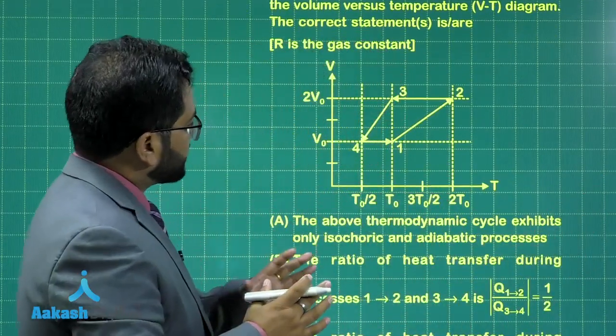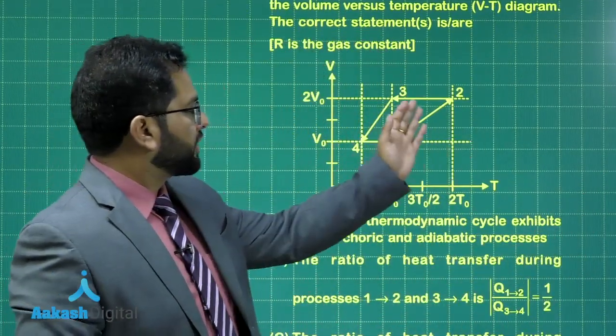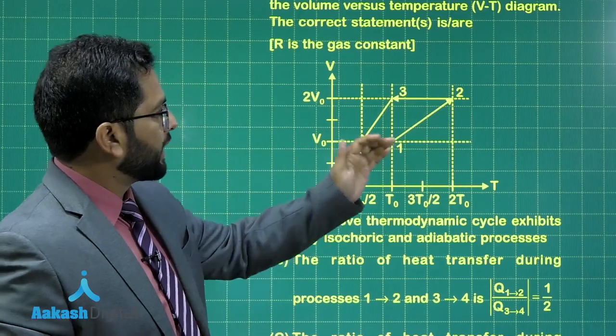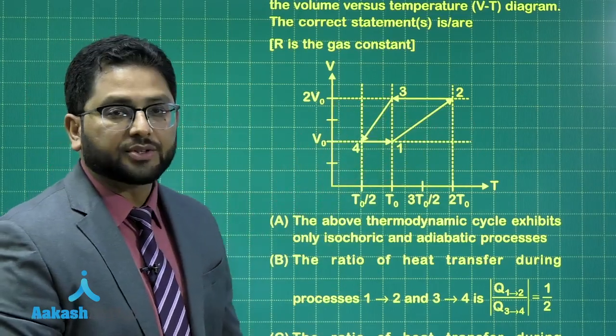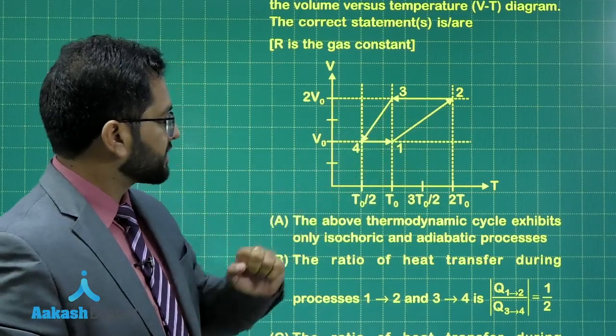Now, if you see processes 1→2, 2→3, 3→4, and 4→1: processes 4→1 and 2→3 are isochoric because the volume is constant.